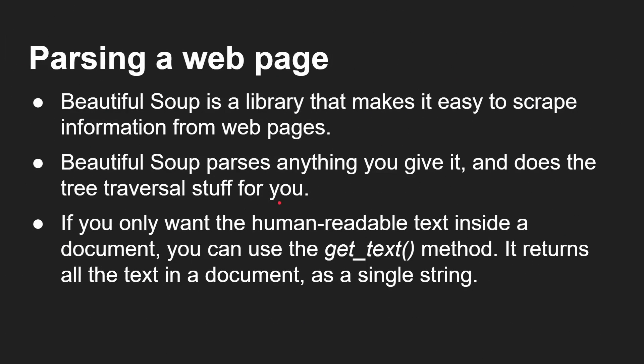Of course, once you get that text back, it's going to be HTML. There might be some JavaScript or CSS in there. So Beautiful Soup is a library that makes it easy to scrape information from web pages. Beautiful Soup parses anything you give it and does tree traversal for you. If you only want the human-readable text inside a document, you can use the get_text method — it returns all the text in a document as a single string, which is just perfect for what we're trying to achieve. So we've got LangChain for accessing the OpenAI model, requests for fetching things off the internet, and Beautiful Soup for making sense of a web page — use those three together and you've got a very powerful combination.